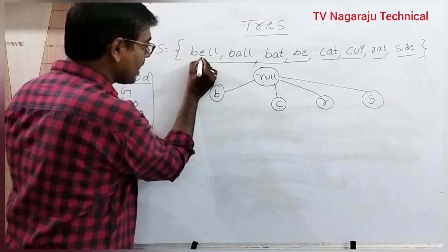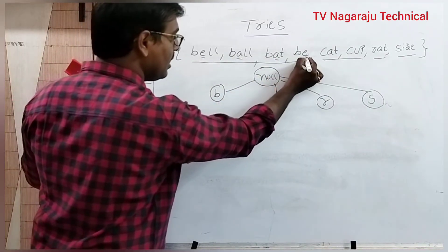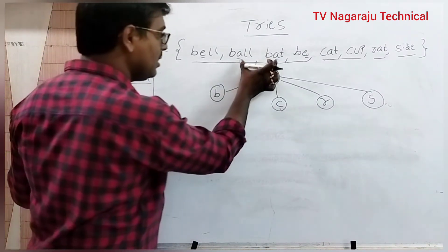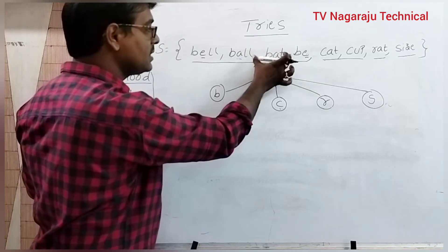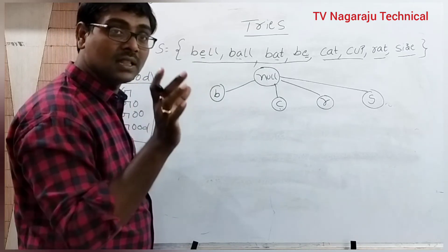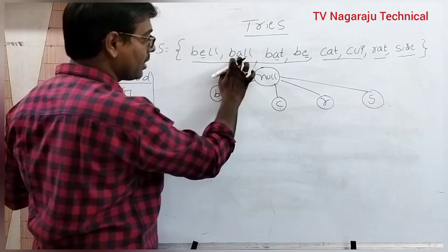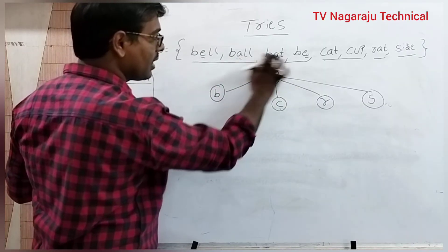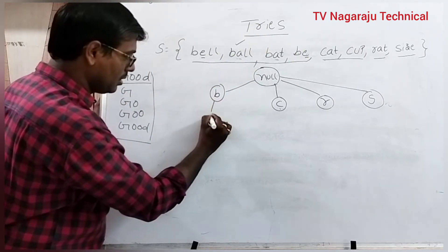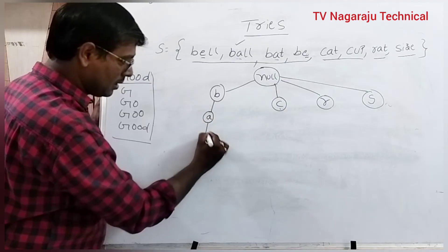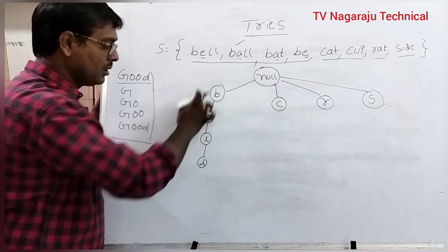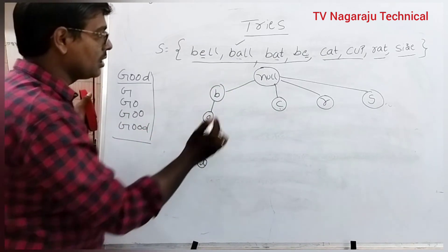Now check the second character: E, A, A, E. Among these, A is the smaller one. These two strings both contain A, so check the third character. Sorting depends only on alphabetical order. A matched — then check the third character: L vs T. The smaller one is L. So first construct the path B-A-L-L. A path contains a string.